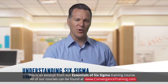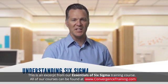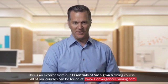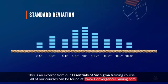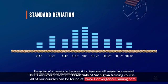It's important to understand some basic terms when trying to visualize the Six Sigma management methodology. Let's start with the term sigma. Sigma is the 18th letter in the Greek alphabet and is used to represent a statistical term called standard deviation. Standard deviation can be defined as the spread of a process performance and its dispersion with respect to a centered average value of all measured points. We're not going to get too deep into how standard deviation is calculated, but we'll come back to it when reviewing the statistical tools.